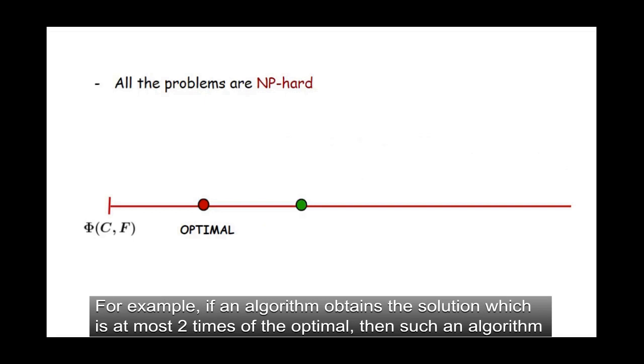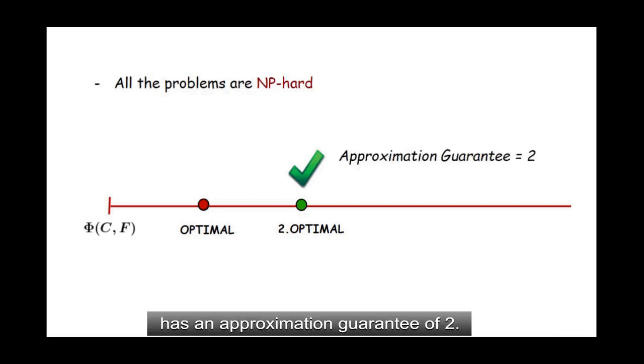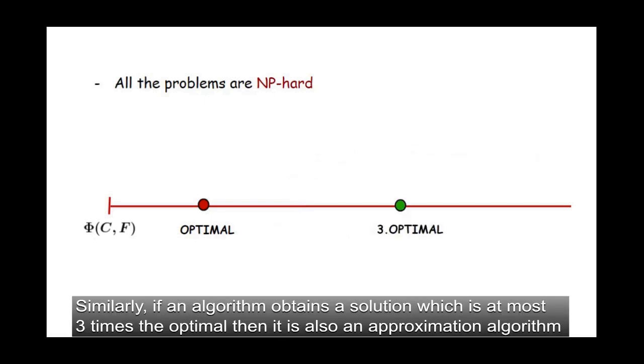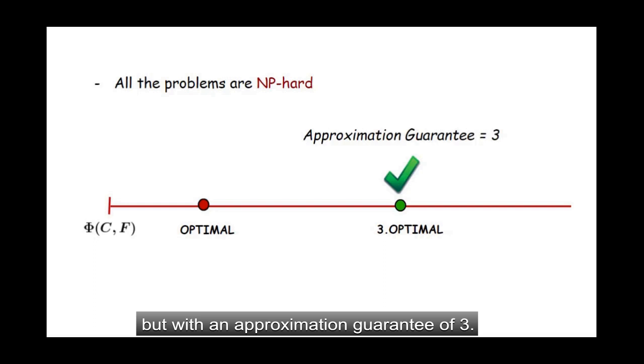For example, if an algorithm obtains the solution which is at most two times of the optimal, then such an algorithm has an approximation guarantee of two. Similarly, if an algorithm obtains a solution which is at most three times of the optimal, then this is also an approximation algorithm, but with an approximation guarantee of three.